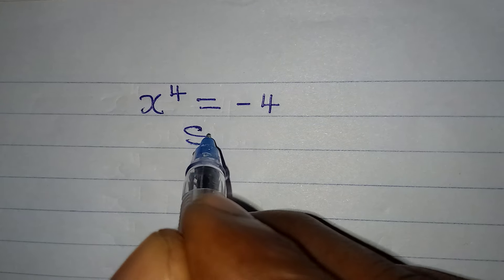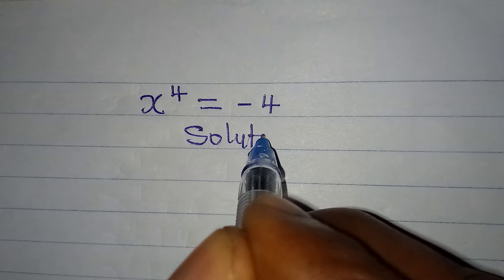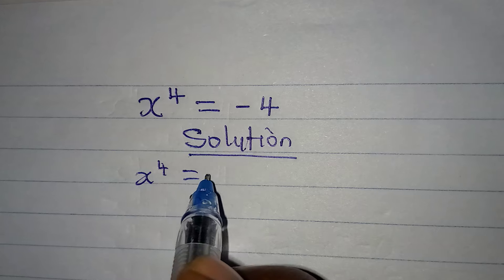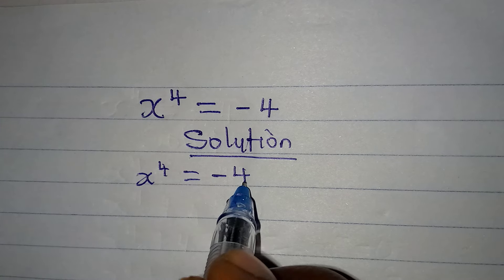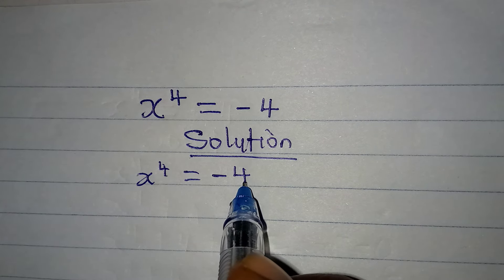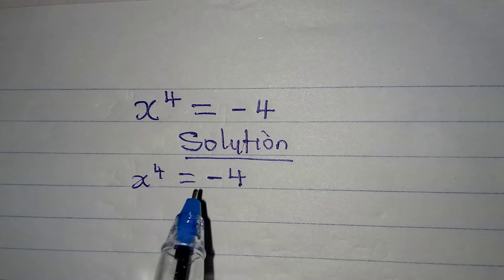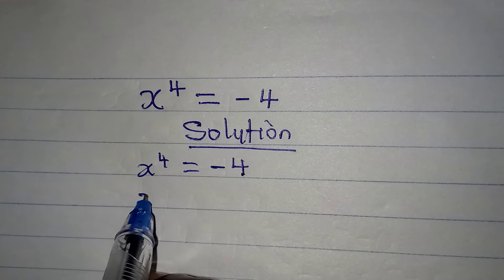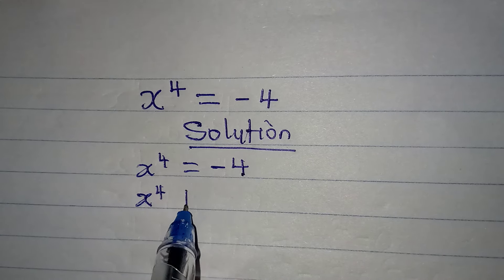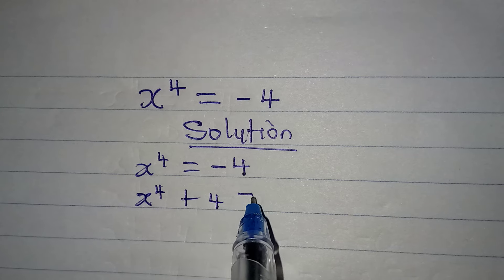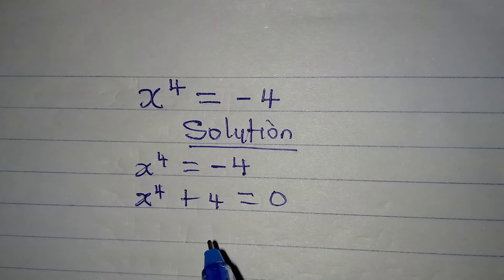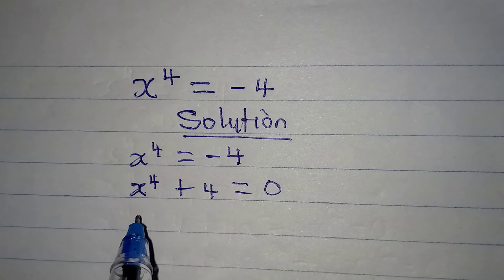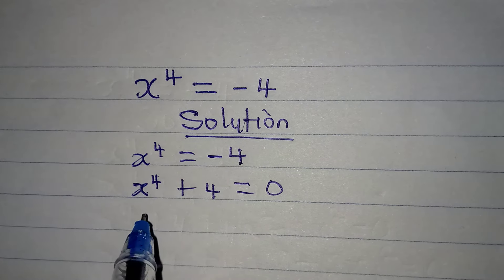Let's solve this problem. We have x to the power 4 equal to negative 4. Because we have this power of 4, we are going to have 4 solutions. x to the power of 4 comes here to become plus 4, equal to zero. This is very difficult or impossible to factorize, so let me introduce other terms.